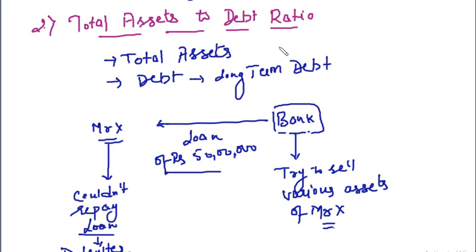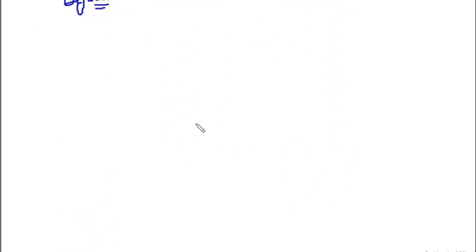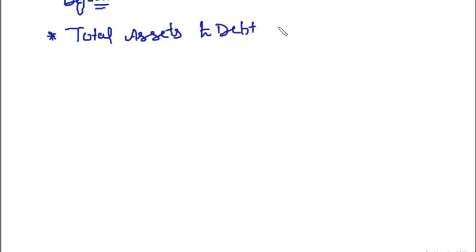So consider Mr. X as a business. Total assets to debt ratio is calculated to identify whether the business has sufficient assets against the long-term debt — that is, to cover the long-term debt, whether the business has sufficient assets or not. Write this down: total assets to debt ratio is calculated to identify whether the business has sufficient asset cover against its long-term debt.